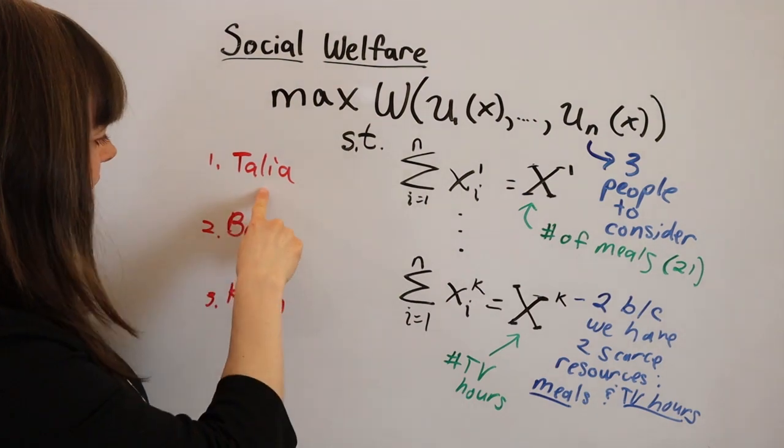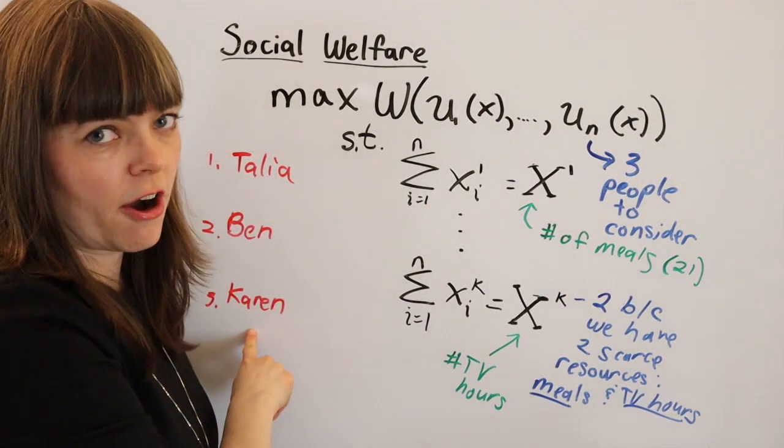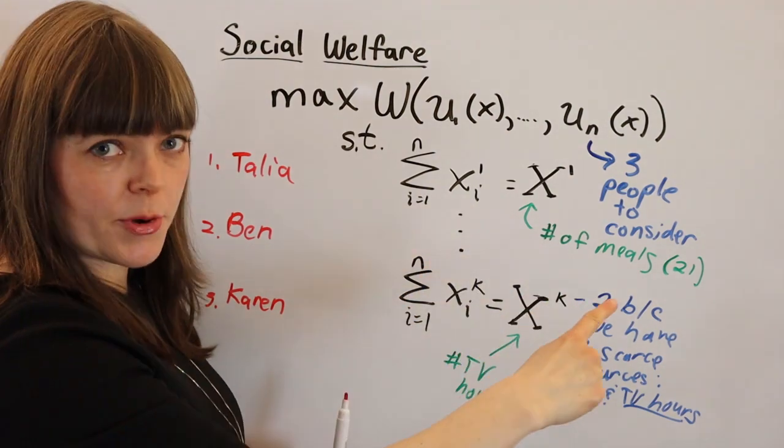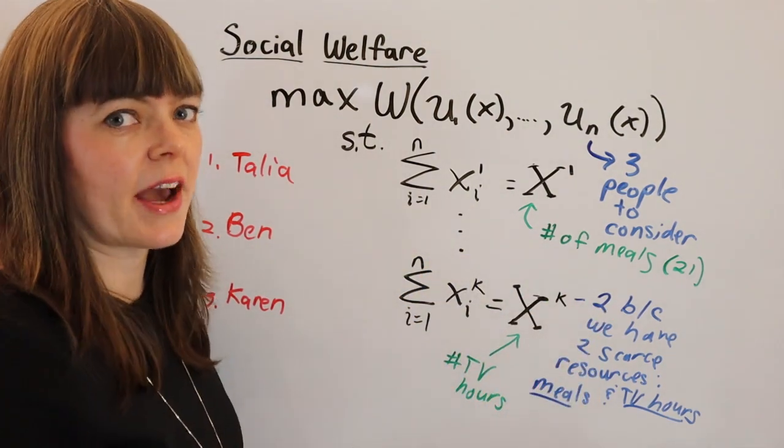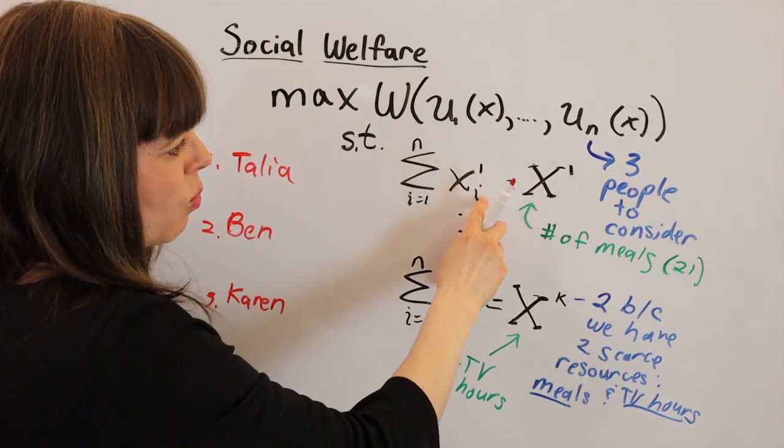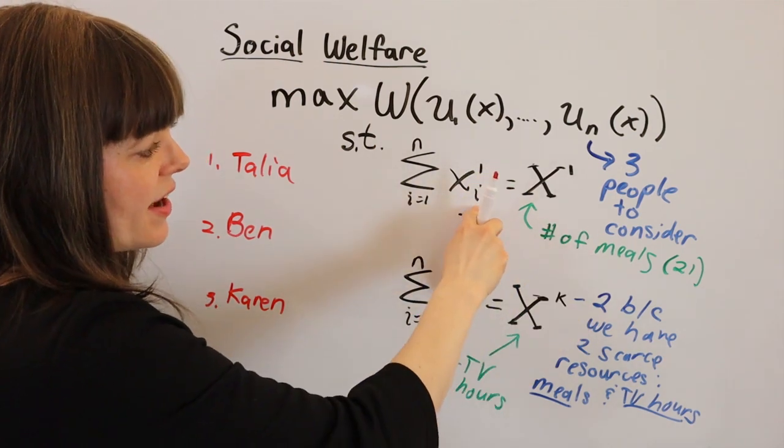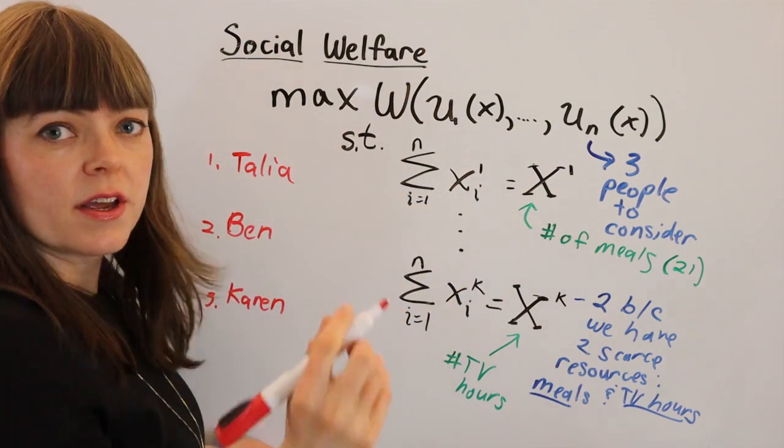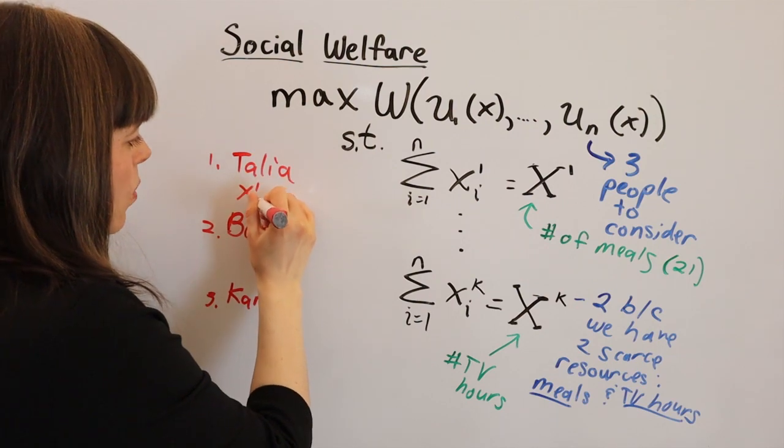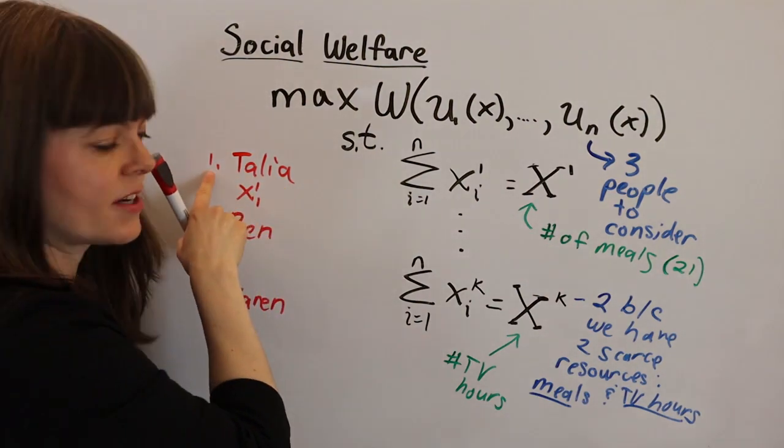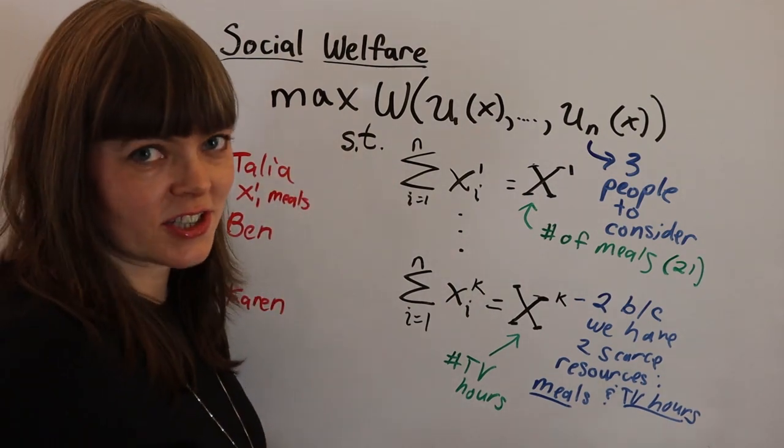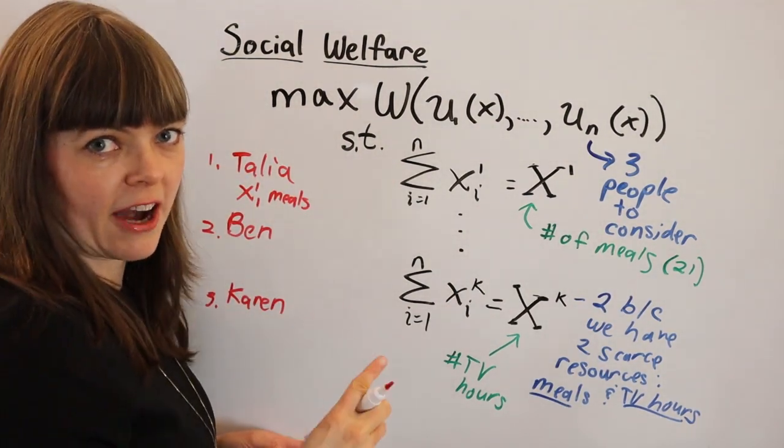So we've got Talia, Ben, and Karen are our three roommates. And each of them needs to get some amount of meals per week and some amount of TV hours per week. And of course, we've got x, one, one is associated with meals. And then i is going to be associated with each of these three people. So Talia is going to get x one, one, because Talia is person number one meals per week that she gets to use the kitchen for. And same with Ben and Karen.